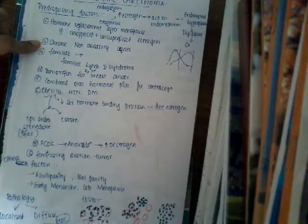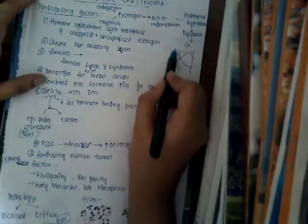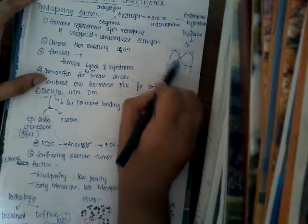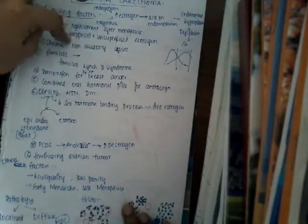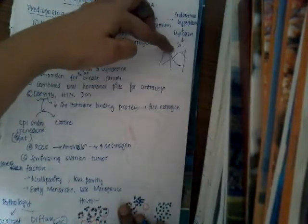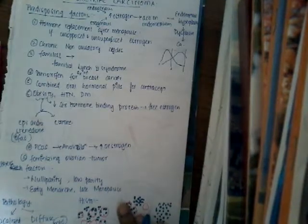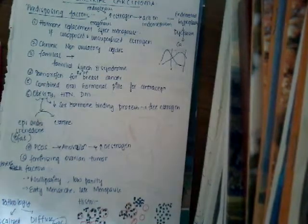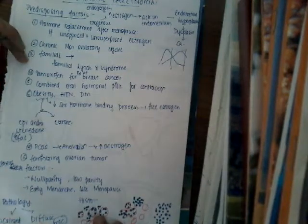The second factor is chronic non-ovulatory cycles. In a normal ovulatory cycle, at the LH phase there is ovulation, and towards the luteal phase estrogen levels decrease while progesterone increases. But in a non-ovulatory cycle, that decrease in estrogen and increase in progesterone do not happen. As a result, estrogen remains constant, causing increased exposure of estrogen to the endometrium.